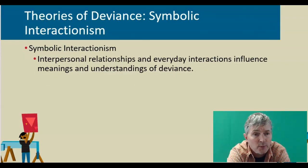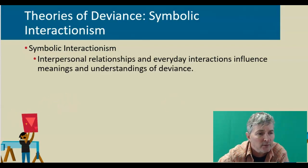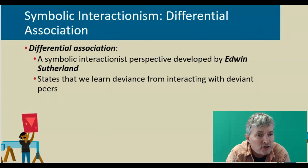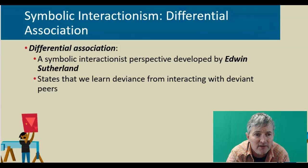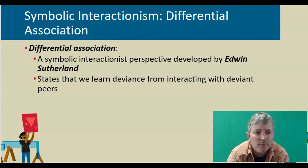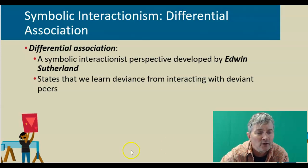Another theoretical perspective is symbolic interactionism, where interpersonal relationships and everyday interactions influence meanings and understandings of deviance and how we interact with deviants. Differential association, coming back to Edwin Sutherland, is a symbolic interactionist perspective that states we learn deviance from interacting with deviant peers. Sutherland suggested that the main reason people become deviant is that they are learning to be that way from the people they associate with. This theory may remind you of social learning theory, which says that we tend to mimic significant role models in our life.